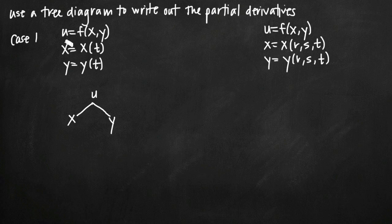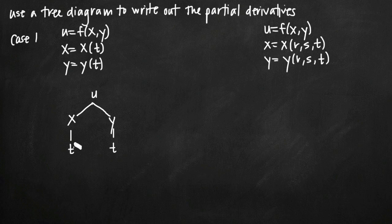We've been told that x is in terms of t, so off of x we're going to have the single variable t. We've been told that y is also in terms of t, so we're going to have one variable, t, off of y as well. If you've been given multiple variables in these functions, you can expand your tree diagram to include those. This type of situation is called Case 1 because there's only one independent variable, t.